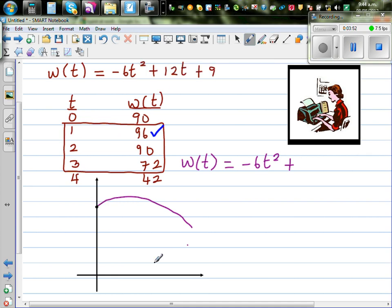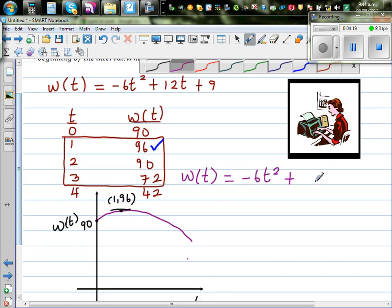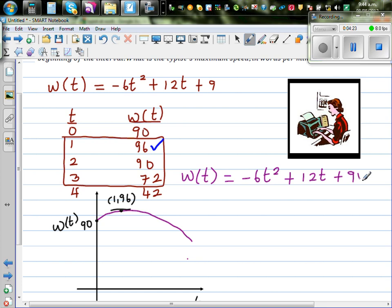Always good to have a graphical understanding. The graph looked like this, starting at 90. This is at 90 at zero. At zero time, this is your time t and this is words per minute. When time is zero, the typist has a speed of 90. This is one minute where you get the maximum speed, 1 comma 96. The function is -6t² + 12t + 90.